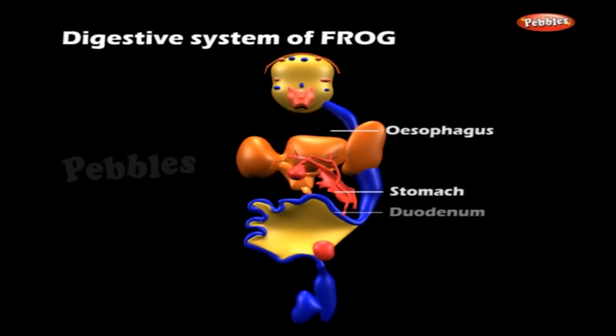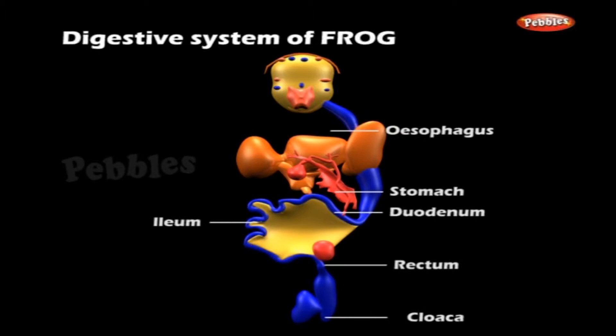The mouth leads into a wide buccal cavity bounded by upper and lower jaws. A set of vomerine teeth is present in the buccal cavity. A row of maxillary teeth are present in the upper jaw and the lower jaw is devoid of teeth. The teeth prevent the prey from escaping and not for mastication.